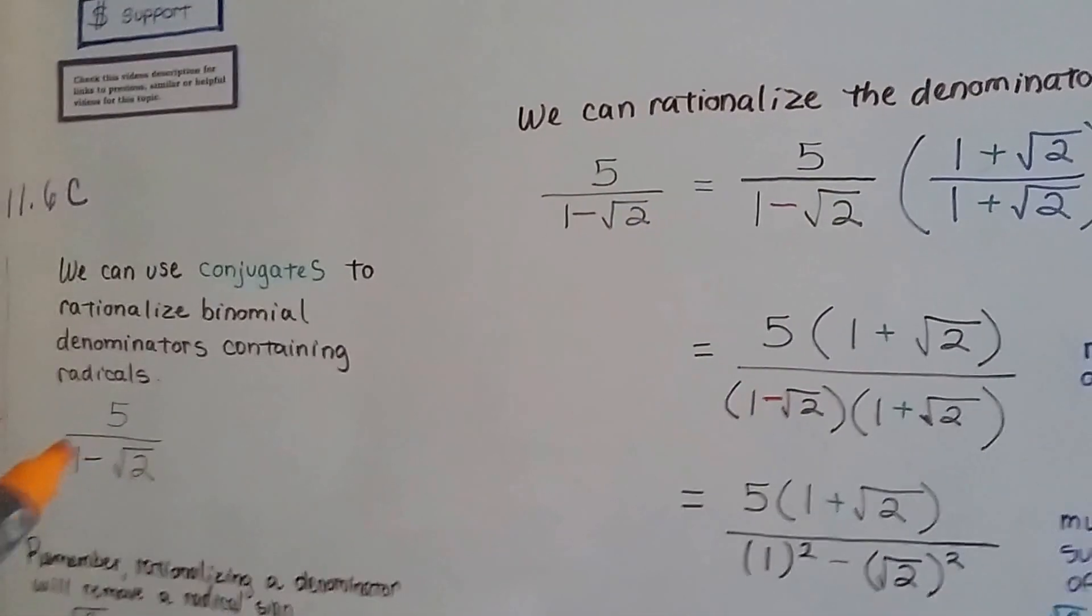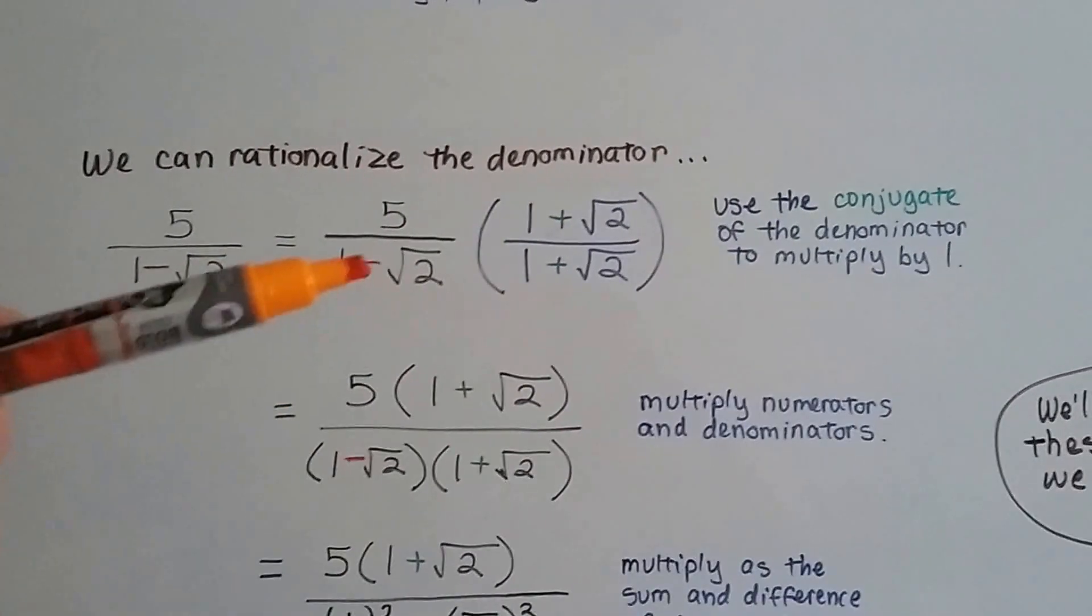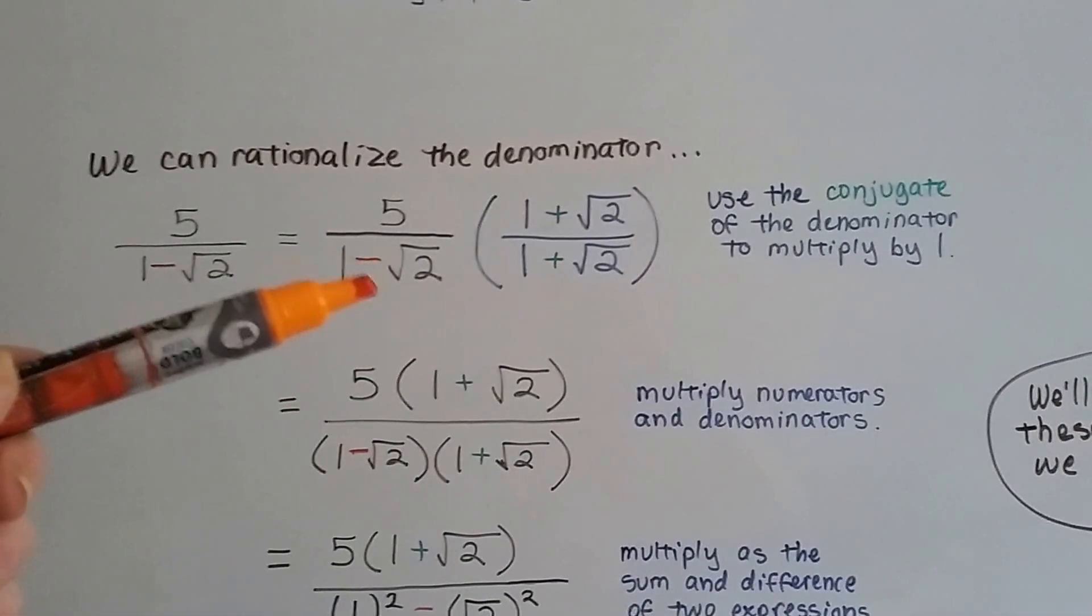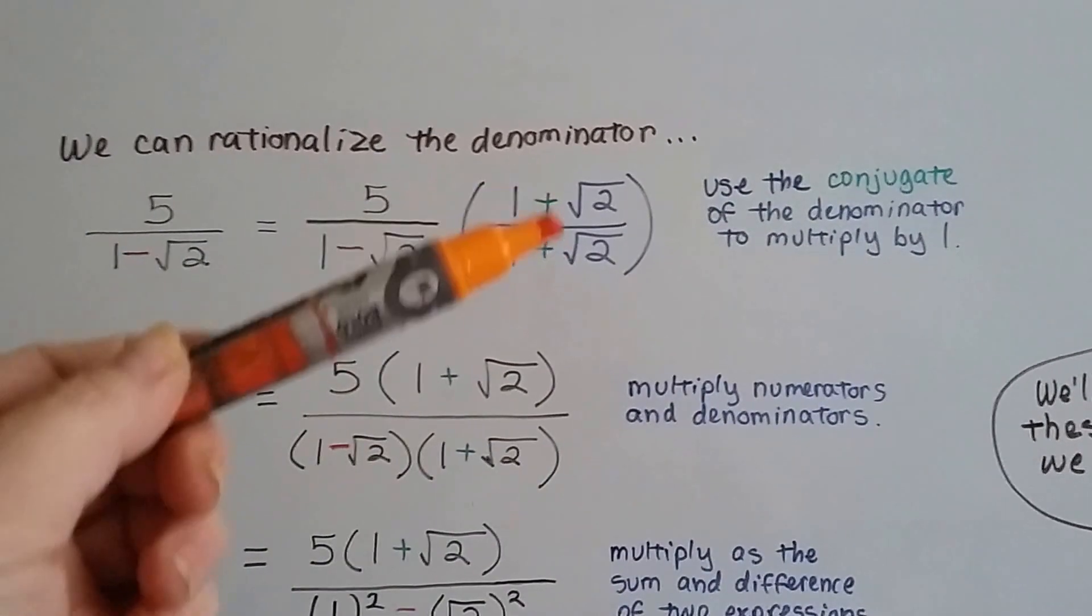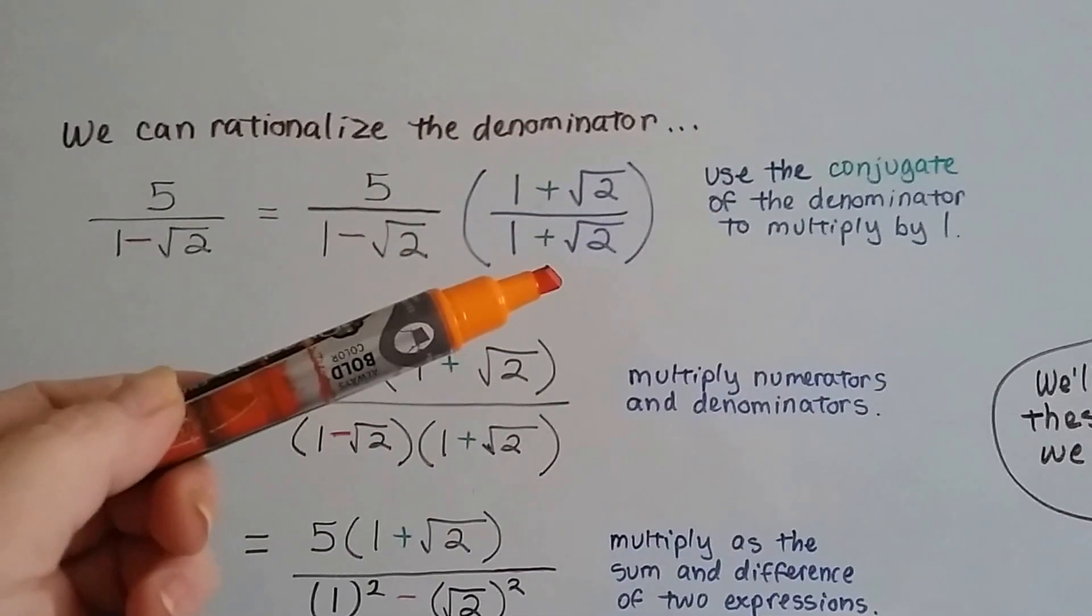So we had 5 divided by 1 minus square root of 2. And what we're going to do is take this denominator and use the conjugate of this denominator as 1 plus square root of 2. I'm going to put it over itself as a 1 because the numerator and denominator are the same, so it equals 1.